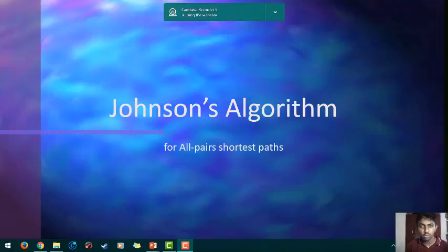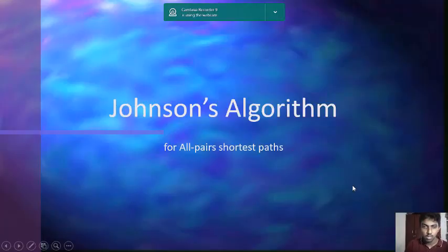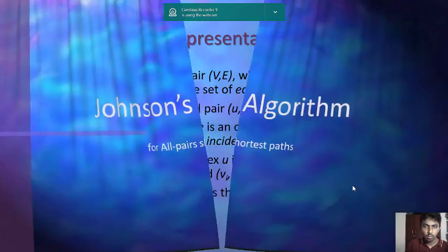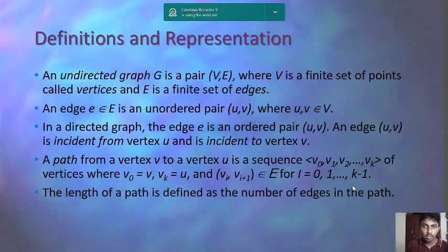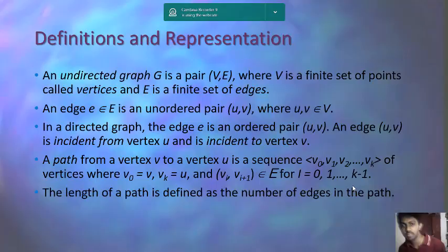Hello everyone, my name is Prashun Jaswal and today I am going to explain Johnson's algorithm for all pairs shortest path. First of all we will look into the definition and representation. A graph is basically a set of vertices and edges. An undirected graph is a pair of V and E, where V is the finite set of points called vertices and E is the finite set of edges.